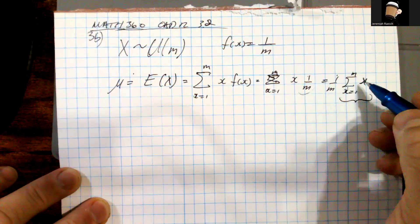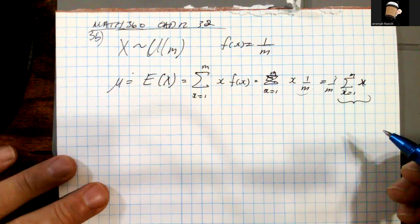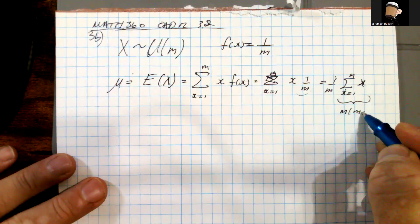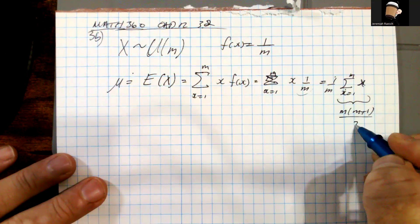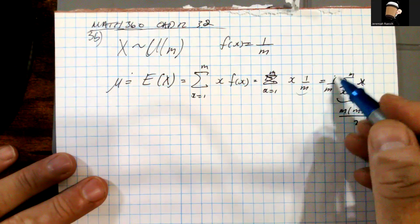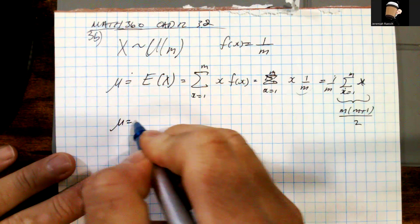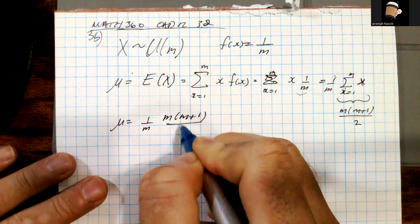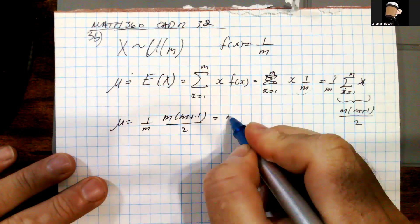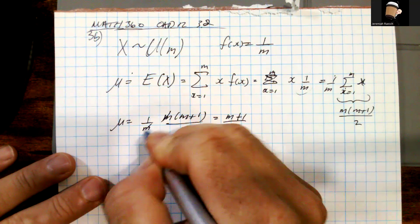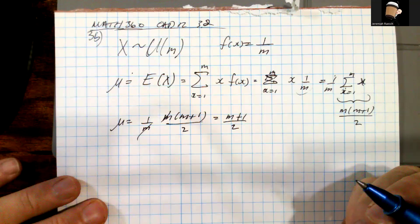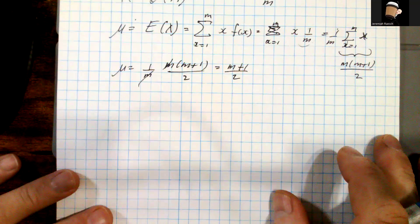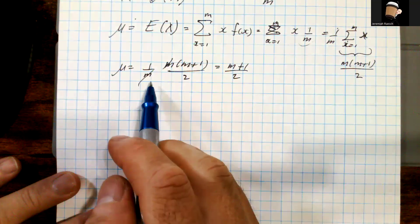As a closed form, the sum of integers from 1 to M equals M(M+1)/2. So E[X] = (1/M)·M(M+1)/2. The M's cancel, and we're left with μ = (M+1)/2 as the mean or expected value of X for this uniform distribution.